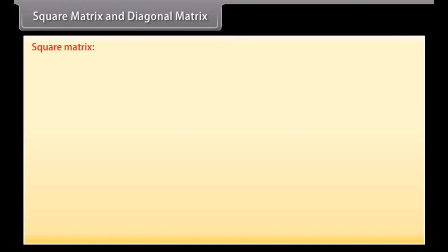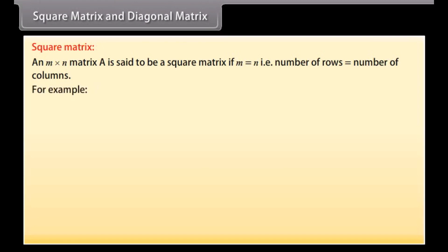Square matrix and diagonal matrix. Square matrix. An M by N matrix A is said to be a square matrix if M is equal to N, that is, number of rows is equal to number of columns. For example, A is a square matrix of order 3 by 3.